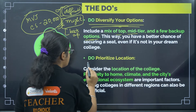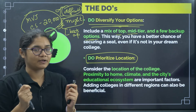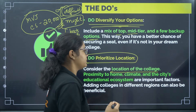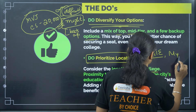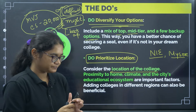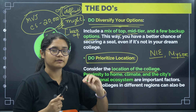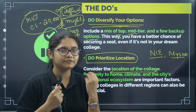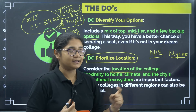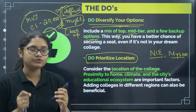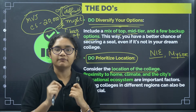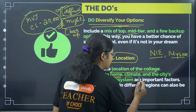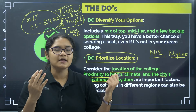The fourth do: prioritize your location. Location is an important factor. For example, NIE — National Institute of Engineering — is located in Mysore. Even if your rank falls within the cutoff range and you're interested in the course, if you're not willing to study in Mysore, adding that option is of no use. Be very particular about the college's location — consider how far it is from home, the climate, and the city's educational ecosystem.